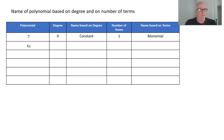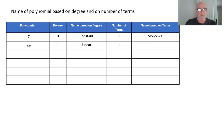4x — the degree of this is 1, since we have x to the first. Something with a degree of 1 is called a linear polynomial. There's only one term, so again, that's a monomial.